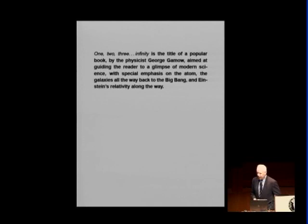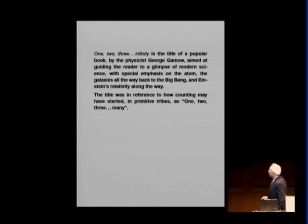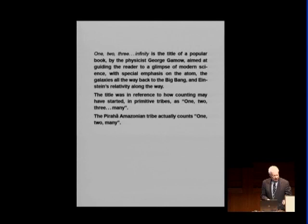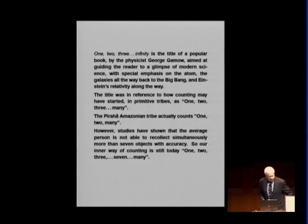To my surprise, three years ago or two years ago, in an issue of Science News, one of the feature articles explained that there is a tribe that counts in a slightly different way. One, two, three, many was in the book, but in fact this tribe counts one, two, many. So one may think how far we have moved since then. Well, psychologists have made studies about our capability of recollecting the memory simultaneously of various objects, and it turns out that the average person has difficulty in recollecting more than seven. So today, we count one, two, three, seven, many.